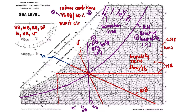Based on our intersection point, we can also read wet bulb, abbreviated WB. The units for wet bulb are Fahrenheit. All the diagonal lines crossing the chart are wet bulb lines.